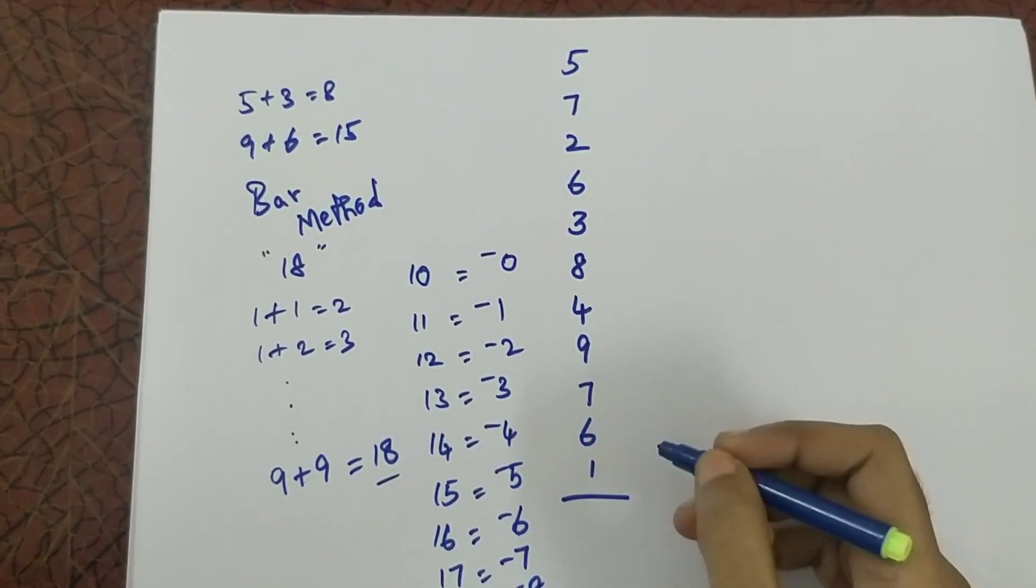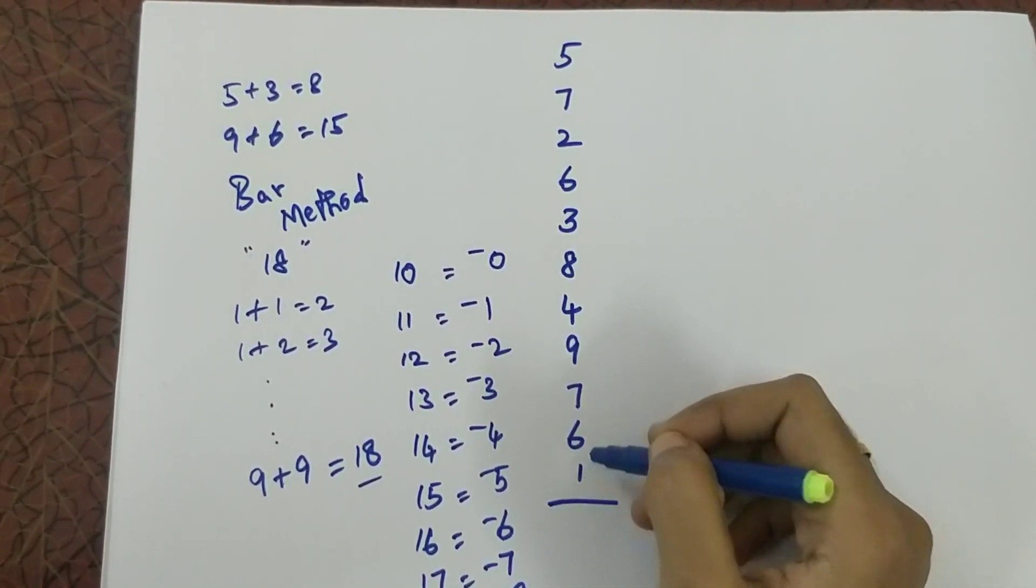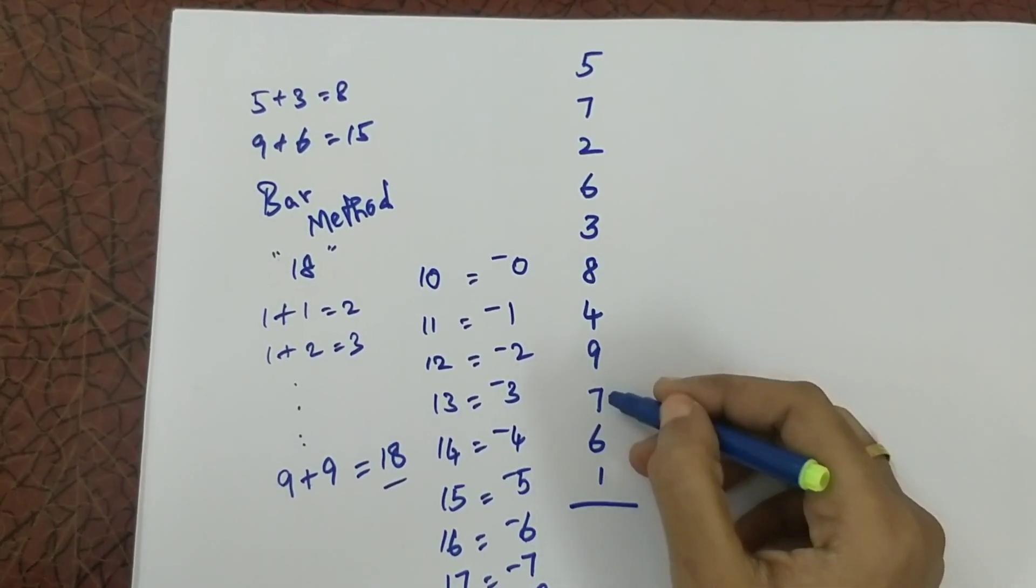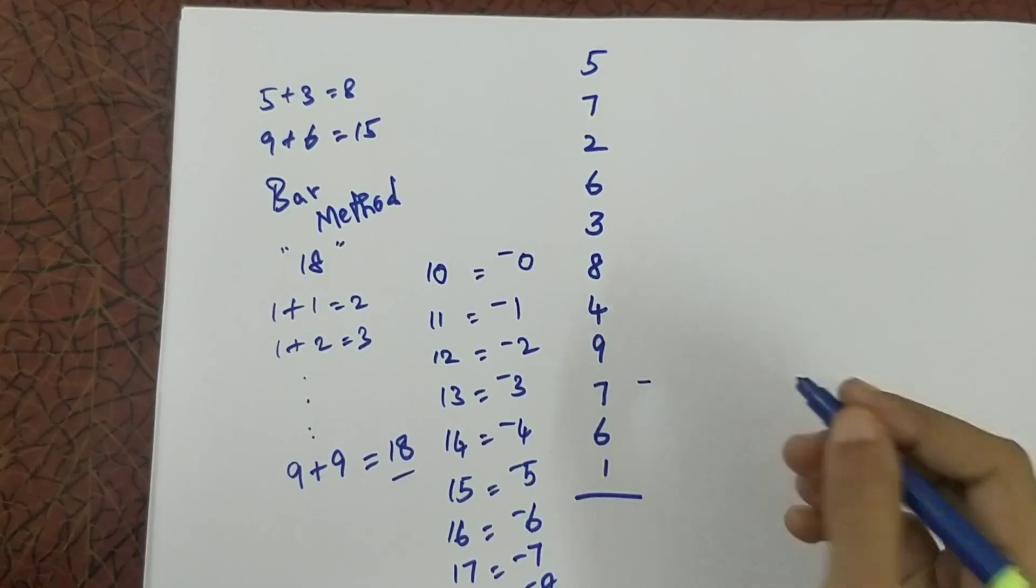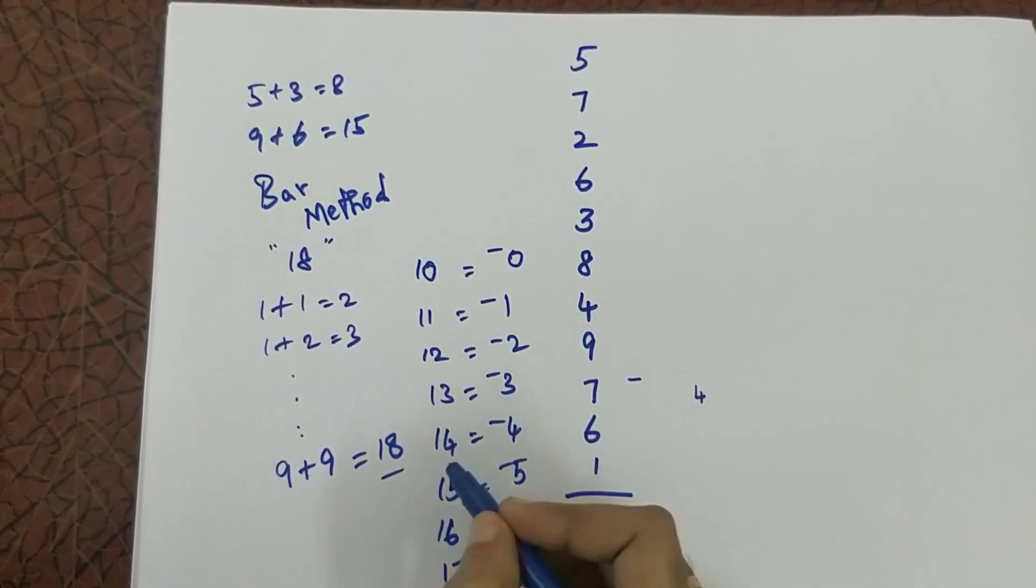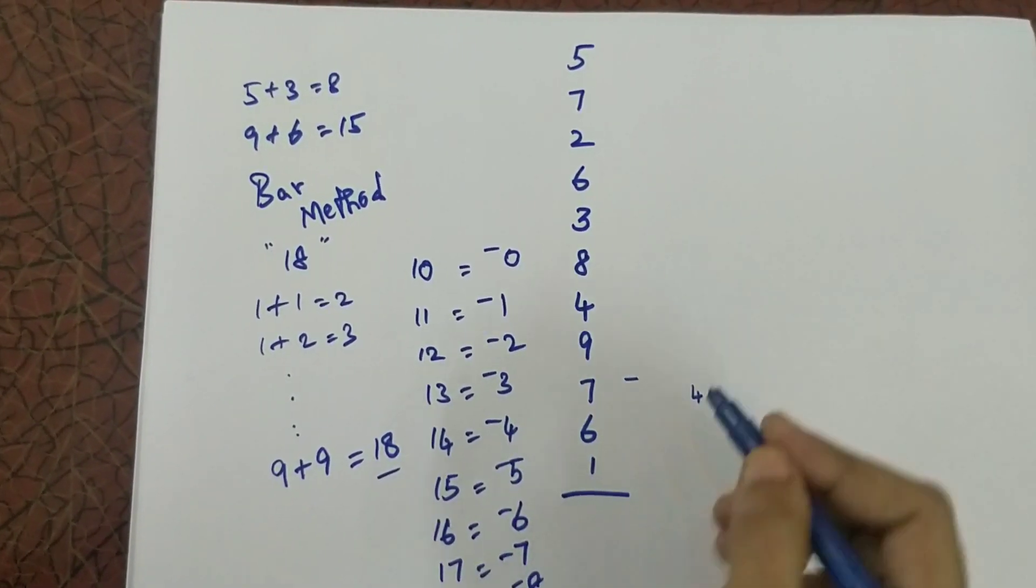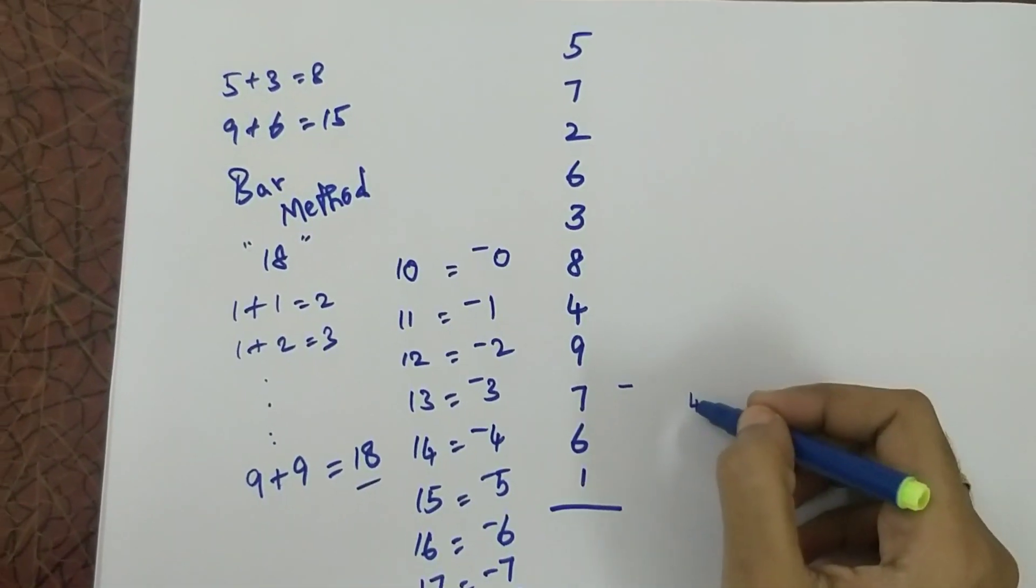Using bar method we are going to solve this sum. 1 plus 6 is 7. 7 plus 7 is 14. So I am writing one bar and the remainder is 4, because for 14 it is bar four. So now my answer is 4.